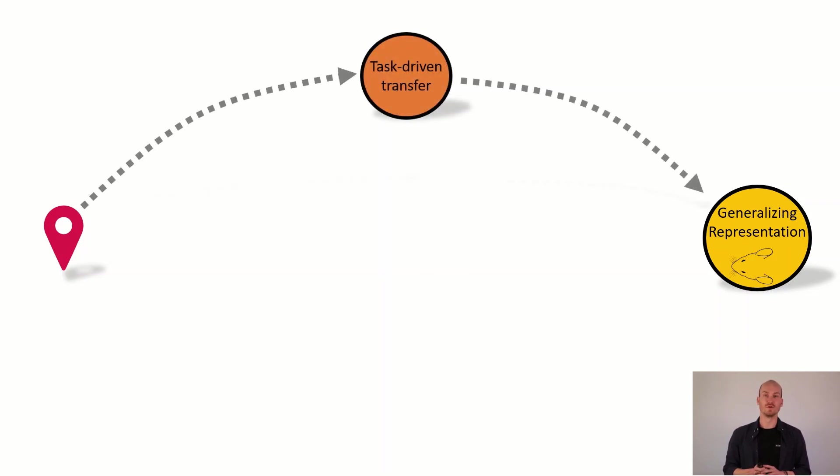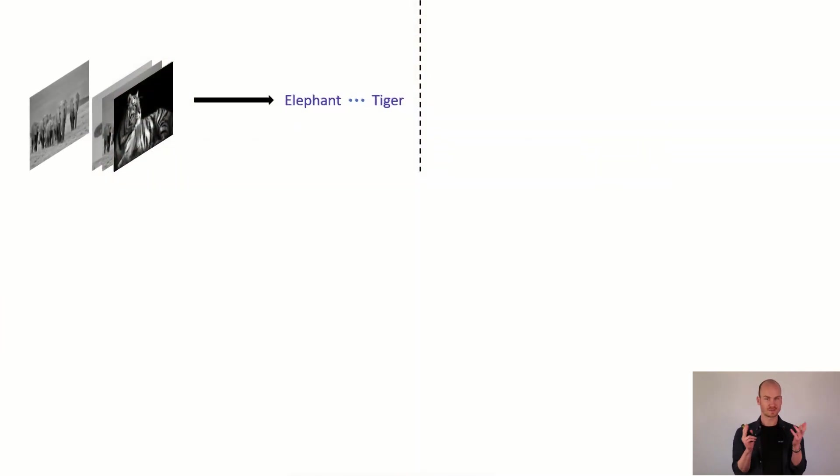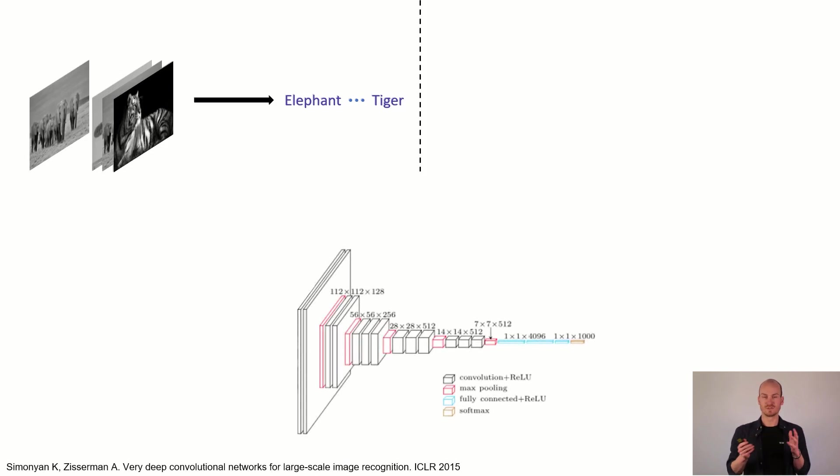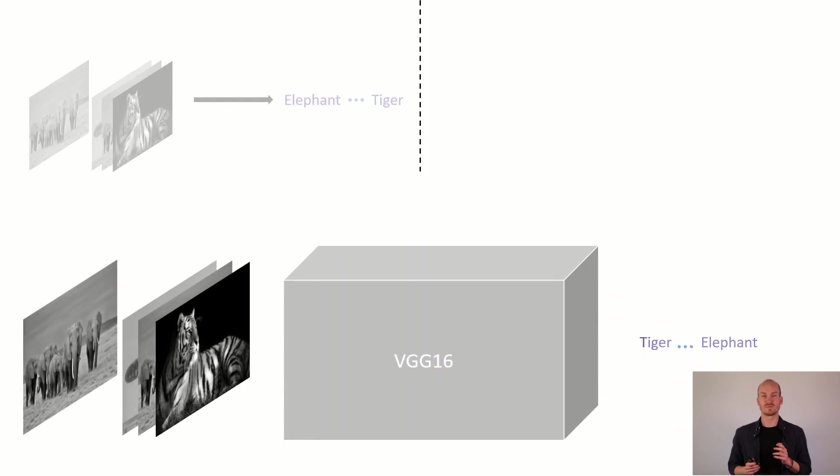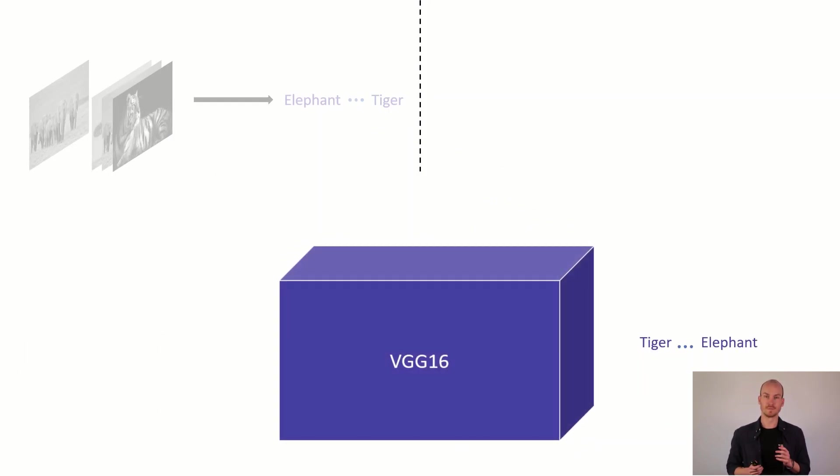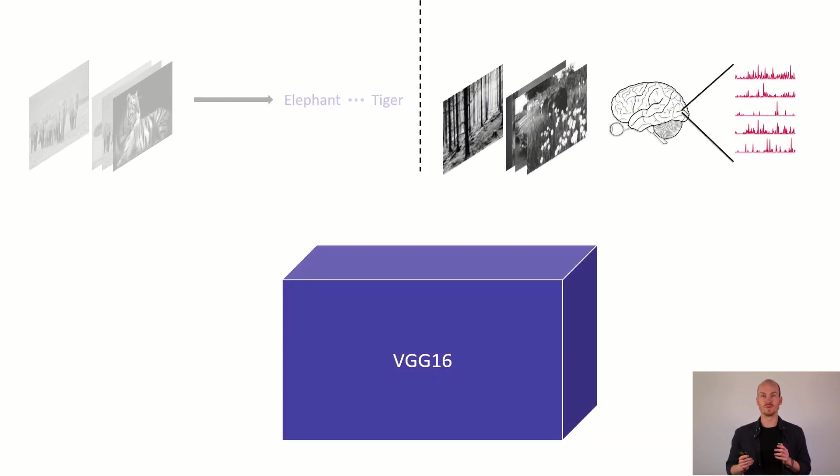There's already one very known approach for this and it's called the task-driven transfer. Let's have a look at how this works. In the task-driven transfer, we have some visual dataset that we use on a standard network architecture like VGG16 and we train this representation with the visual dataset. Now what we do is we try to predict neural responses in the visual area with the representation that was trained on the visual dataset.